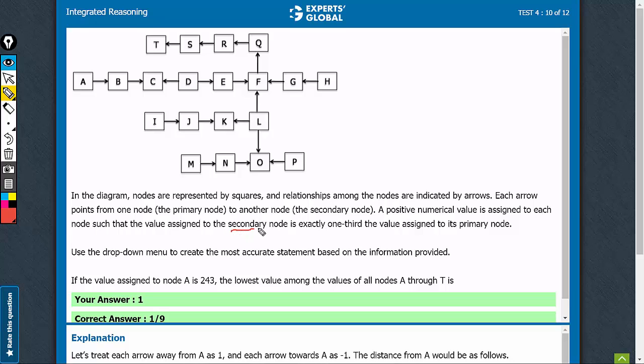The value assigned to secondary node is one-third the value assigned to its primary node. A is 243. So, the most efficient way would be to just keep solving it.